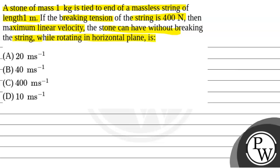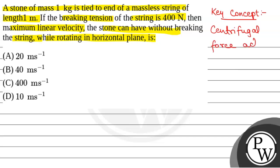We will solve this question. The key concept that will be used to solve this question will be centrifugal force. This centrifugal force acts radially outward and is given by Fc = Mv²/R, where R is the radius of the circular motion, V is the velocity, and M is the mass of the particle.